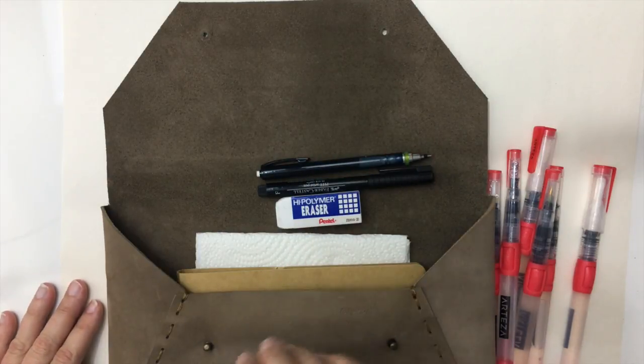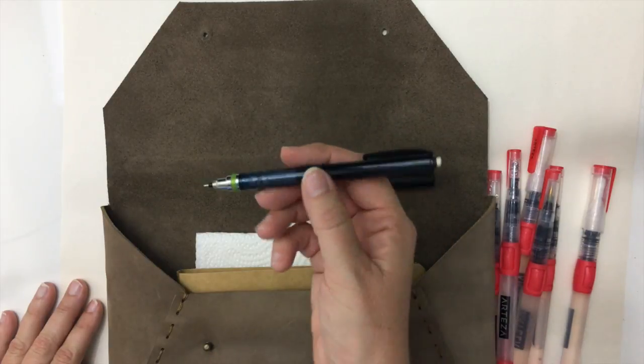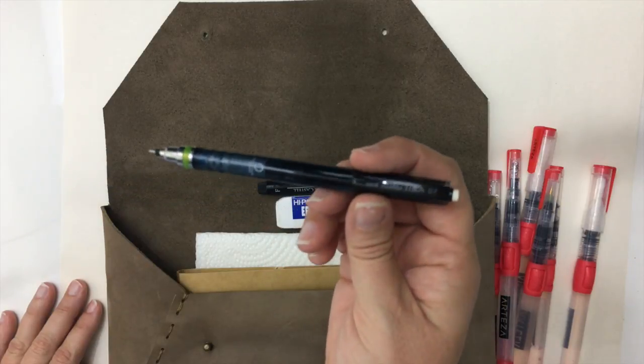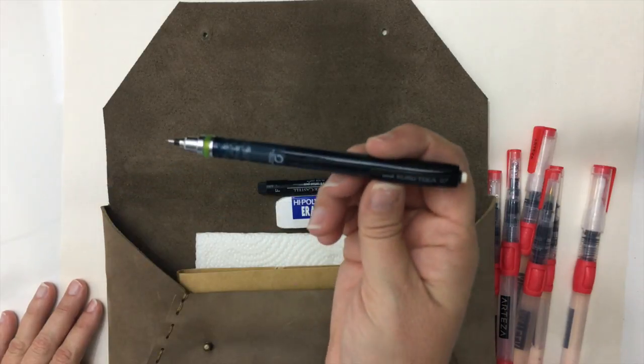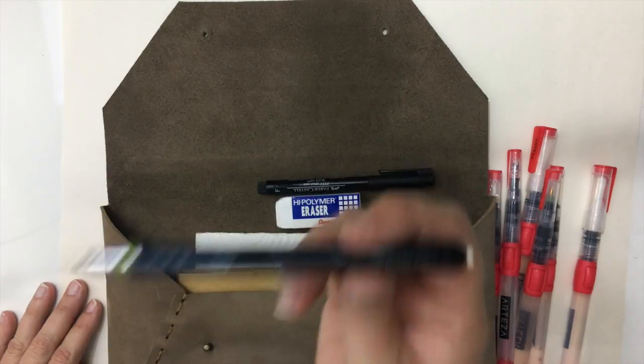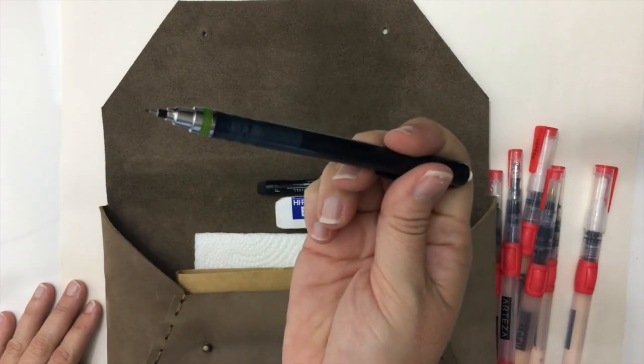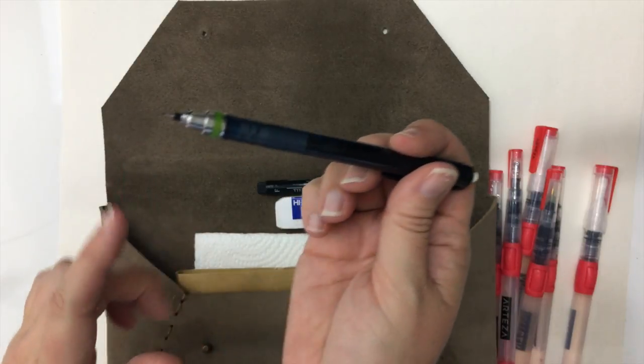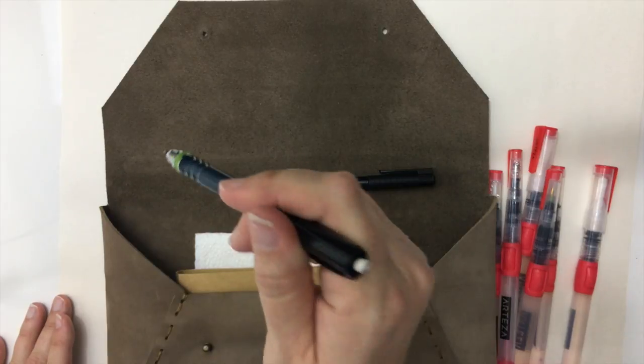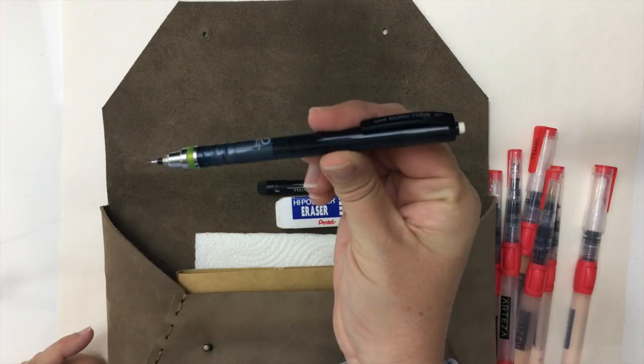As far as what I do when I'm urban sketching or outside, I first start with sketching things with a pencil. My favorite pencil is this Uni Kuratoga. I love this pencil, it's a mechanical pencil. This is the engineer in me coming out, but it's Japanese and it always keeps a sharp point because it's designed to rotate as you push down and pick up.